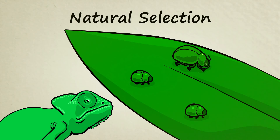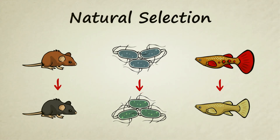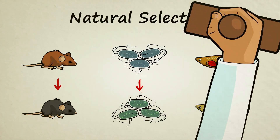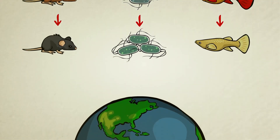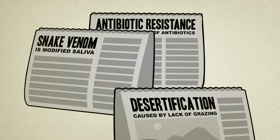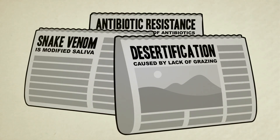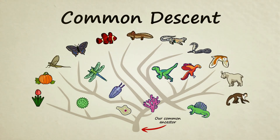Darwin called this process natural selection. Since Darwin first put forth his idea in the mid-1800s, natural selection has been studied and witnessed numerous times in nature and in the science lab. What started out as a mere idea is now officially an observable fact. Darwin's discovery has greatly expanded our understanding of the natural world, led to countless new breakthroughs, and finally allowed scientists to seriously consider the idea of common descent.